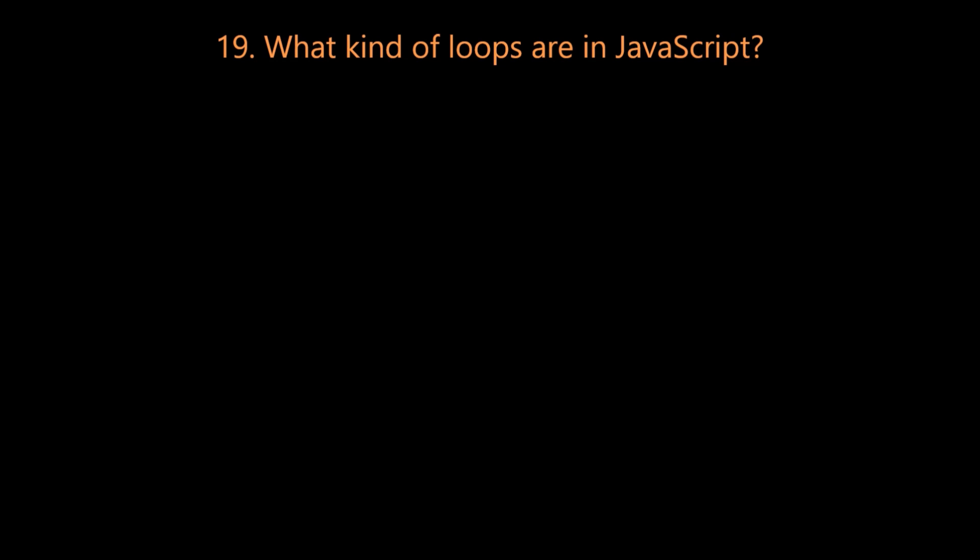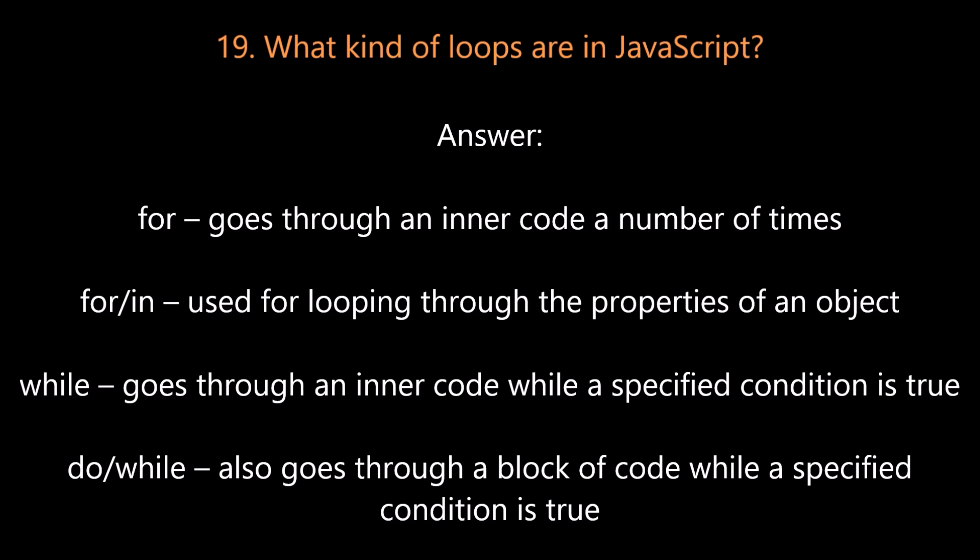Question number nineteen: What kinds of loops are in JavaScript? The 'for' loop goes through inner code a number of times. 'For...in' is used for looping through the properties of an object. 'While' goes through inner code while a specified condition is true. 'Do...while' also goes through a block of code while a specified condition is true.